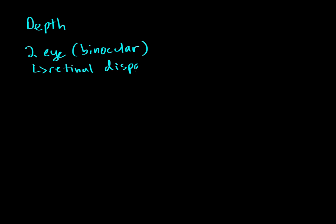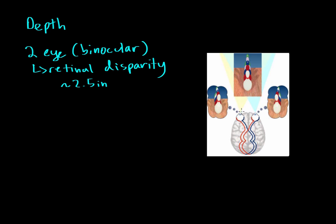Binocular vision gives us something known as retinal disparity. Since our eyes are about two and a half inches apart, we get slightly different views of objects in the world around us. For example, at a bowling alley, your left eye sees the bowling pins from one angle and your right eye sees them from another angle. Your brain takes these two images, puts them together, and gives you a combined image — providing a degree of depth perception. That's retinal disparity.